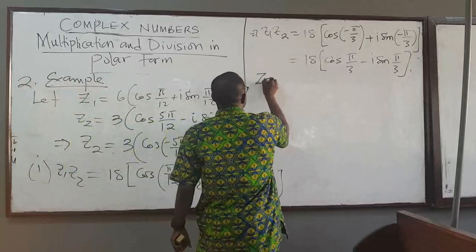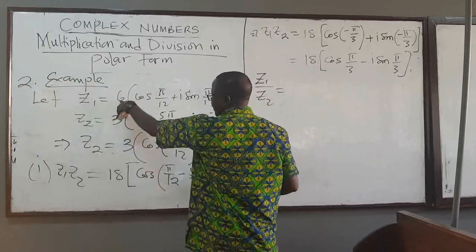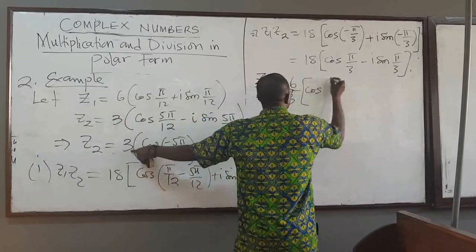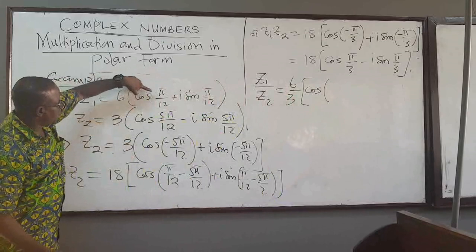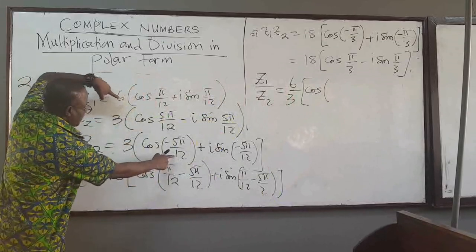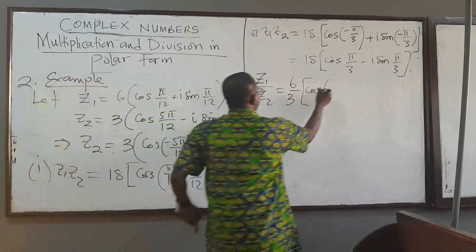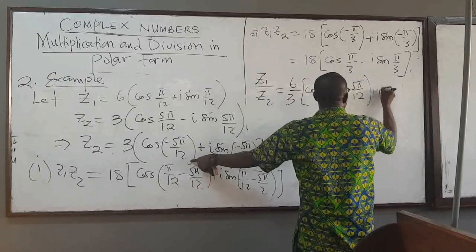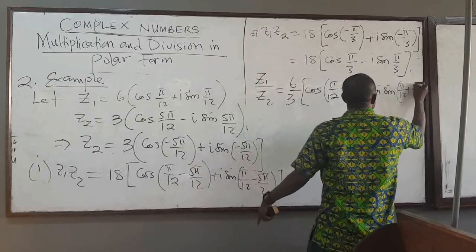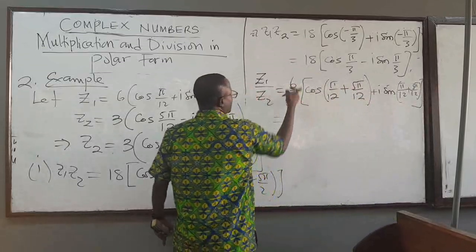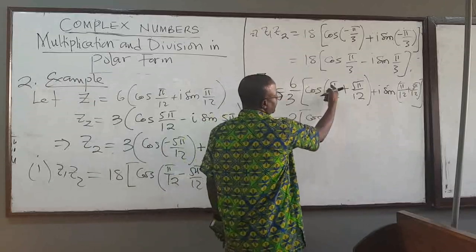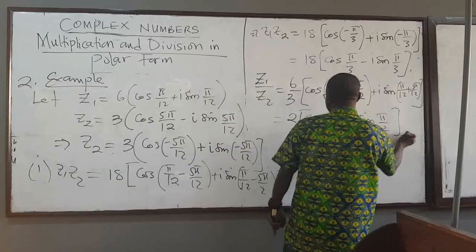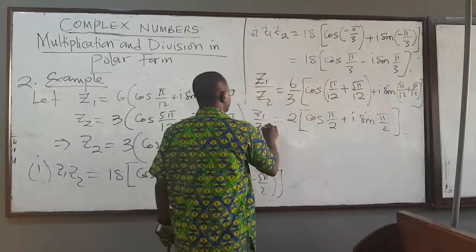To finish, let's find z1 over z2. I take 6 divided by 3, which is 2. And then cosine of — because I'm dividing I subtract: pi over 12 minus negative 5 pi over 12, so minus minus becomes plus. That gives pi over 12 plus 5 pi over 12. The sine part is the same thing. This equals 2 times cosine of 6 pi over 12, which simplifies to pi over 2. So z1 over z2 equals 2 times cosine of pi over 2 plus i sine of pi over 2.